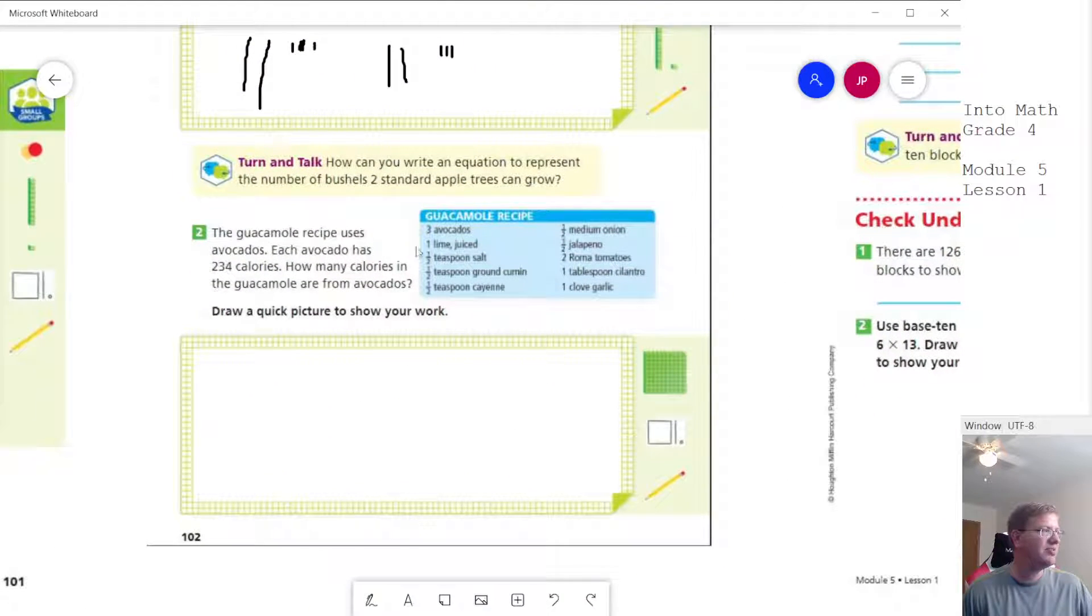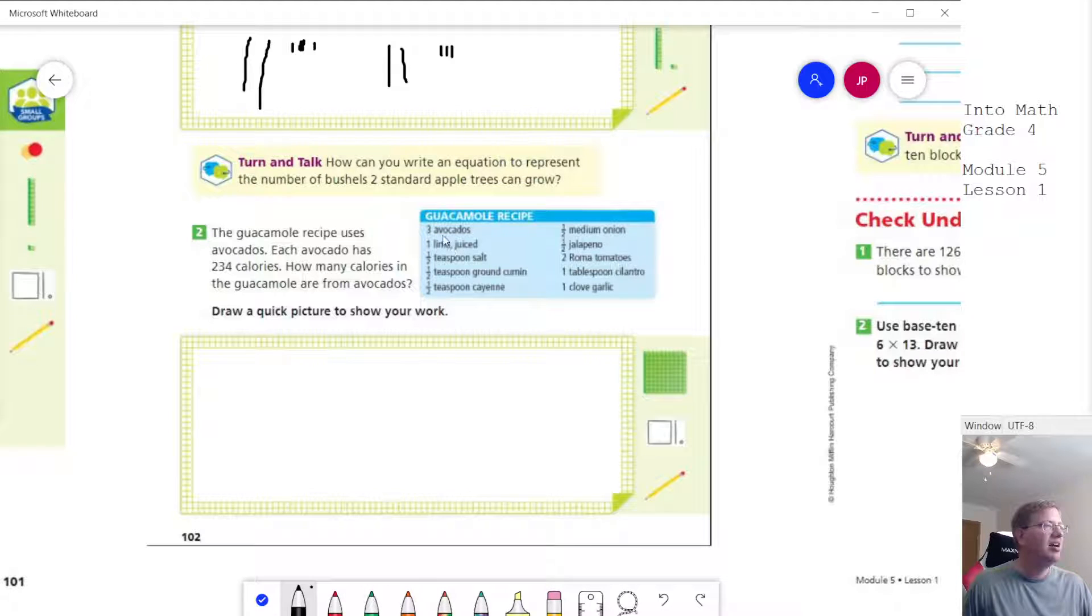And for this one, we want to figure out how many calories in the guacamole are from avocados. So we're gonna do 234 times 3 because we are using three avocados. I do like guacamole very much. I don't always use tomatoes. I probably do without those. I could probably replace some of this, like the cumin and salt and cayenne, with adobo seasoning. But that's neither here nor there. We want to do 234 times 3.